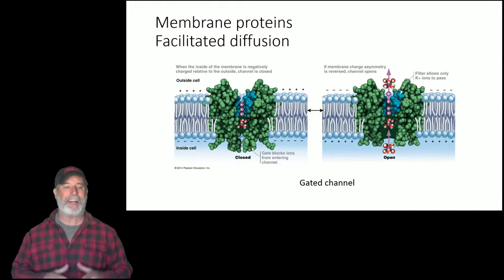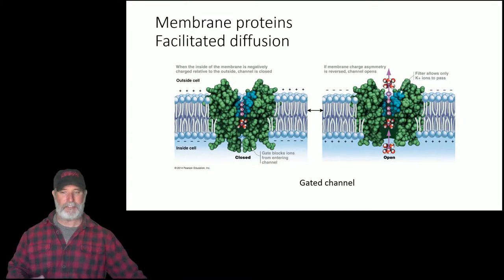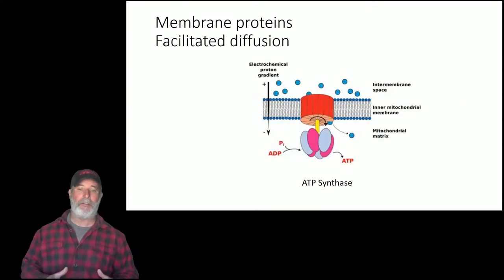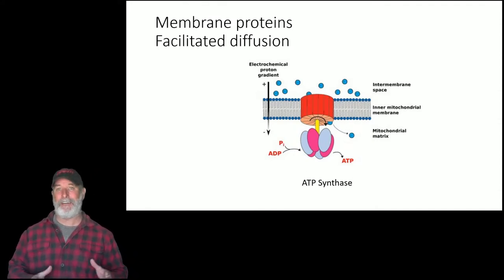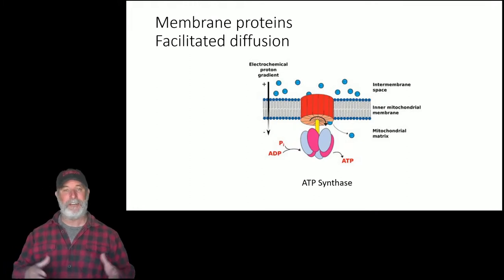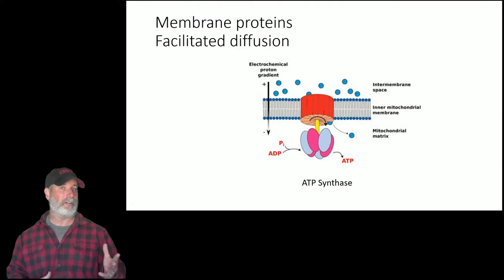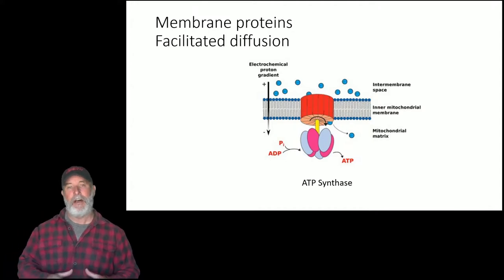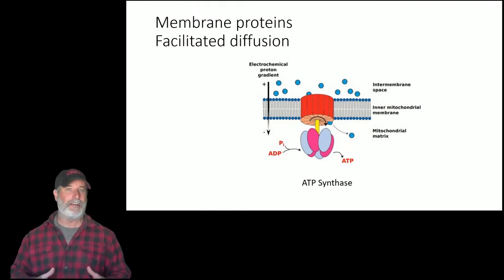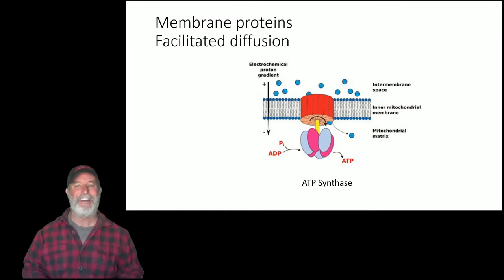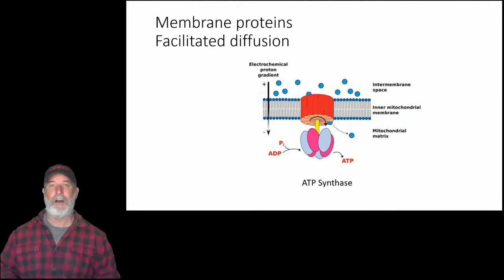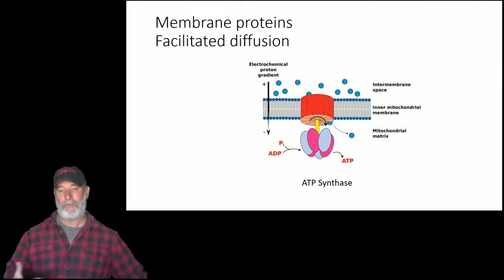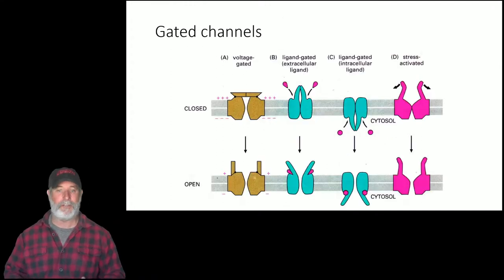Most ion channels are gated — they open and close — allowing cells to regulate when ions diffuse in or out. Another critical type of facilitated diffusion involves ATP synthase: the facilitated diffusion of protons through ATP synthase is used to make large amounts of ATP in a process called chemiosmosis — chemical pushing — which you will learn about in both photosynthesis and cellular respiration.